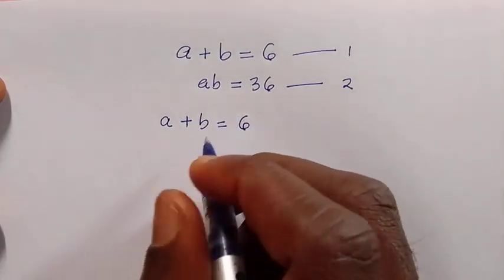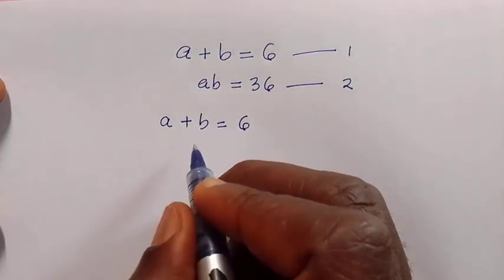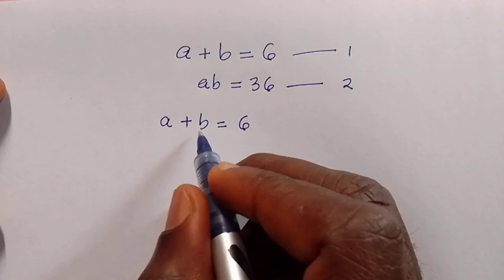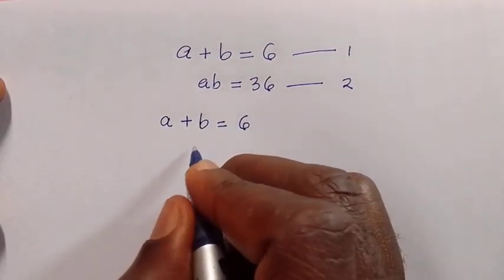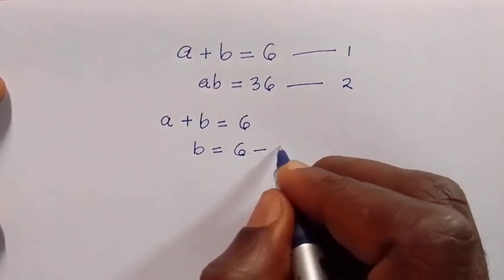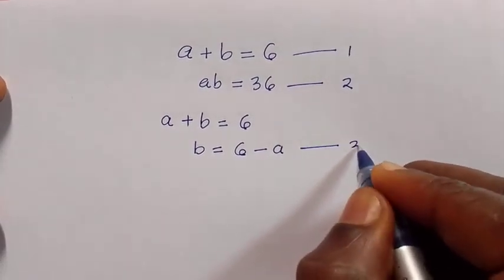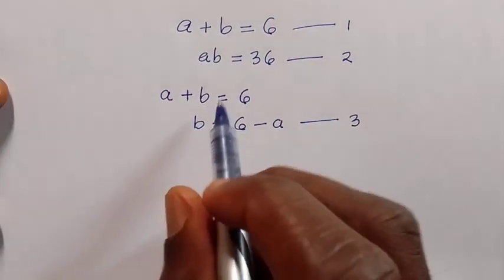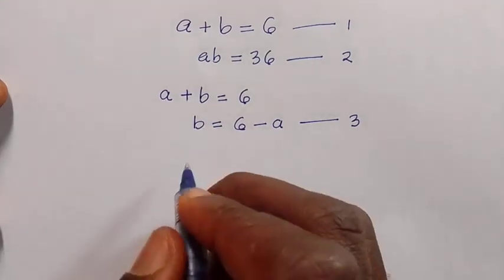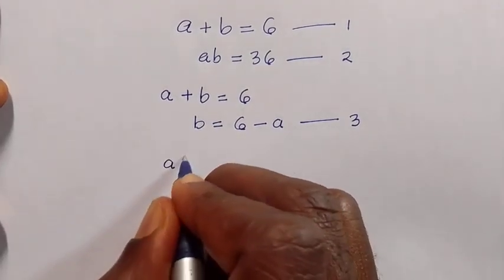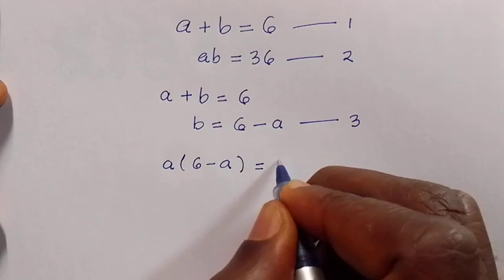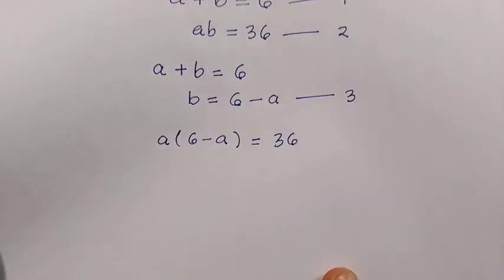We need to make a new equation. Suppose we want to get the value of a — we make b the subject of the formula. By doing that, we have b equals 6 minus a, and we consider this as equation 3. Then we replace b in equation 2 with equation 3, giving us a times (6 minus a) equals 36.